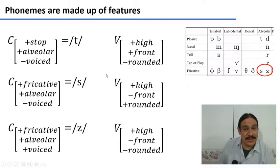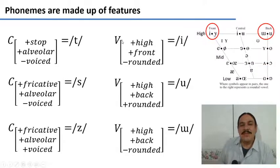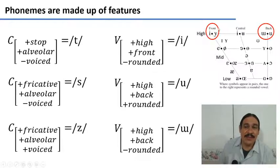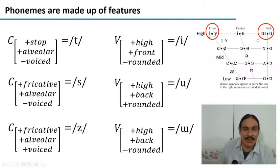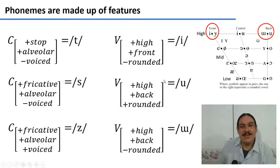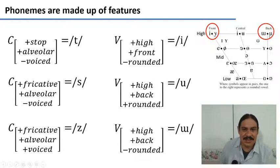Let's take a look at the vowels. If we have a vowel that is [+high] and [+front], we could have either of two sounds. Then we have the third feature of [−rounded], meaning it's not a rounded vowel, so it can only be this one: the vowel E. Now, if we had a vowel that is [+high], [+back], and [+rounded], it could only be this one: the phoneme U.